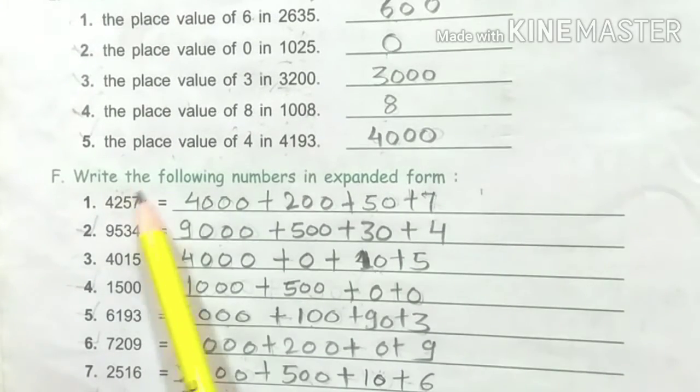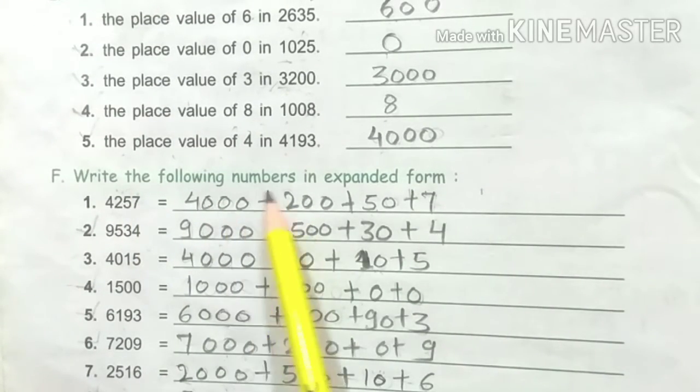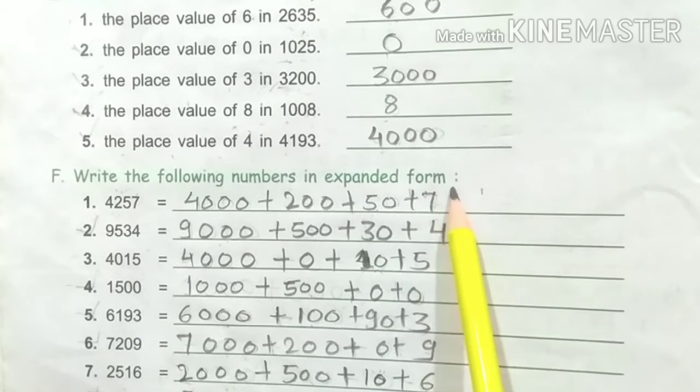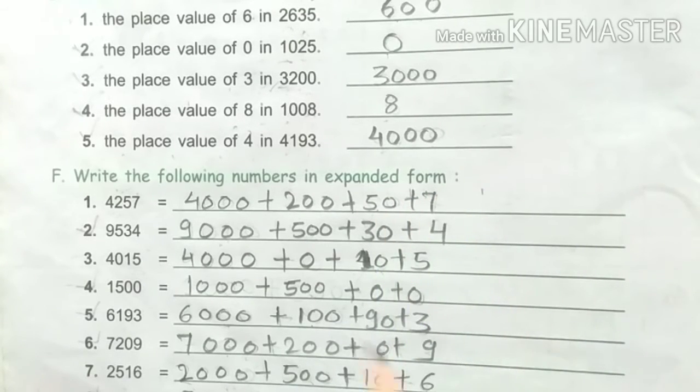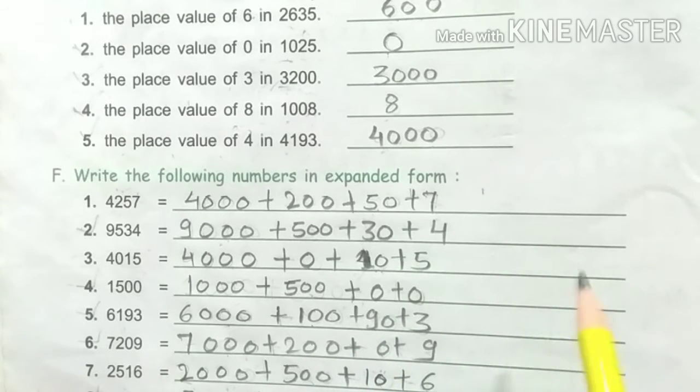Now, next: write the following numbers in expanded form. What is expanded form? To express a number as the sum of the place value of its digits is called the expanded form.